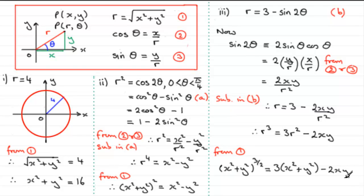You can see that if we had to sketch or plot this graph it's quite complex compared to the polar form. I hope that's given you some idea of converting polar equations of curves to their corresponding Cartesian equations.